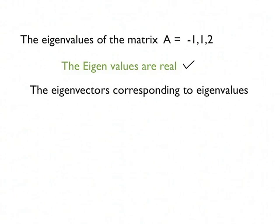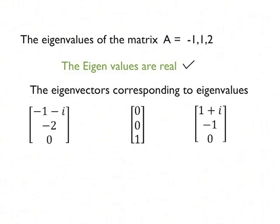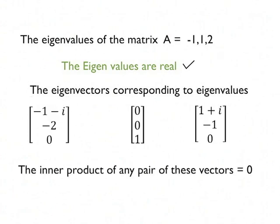If we calculate the eigenvalues of matrix A, they come out to be real, which checks out our first property. We calculate the eigenvectors corresponding to these eigenvalues and take their inner product, comes out to be zero, which says that the eigenvectors are orthogonal.